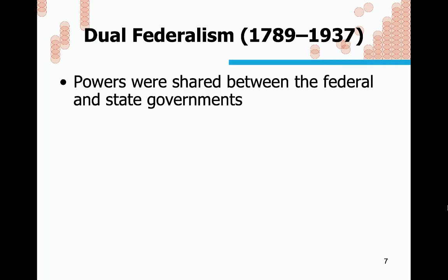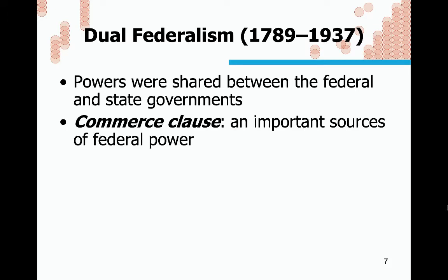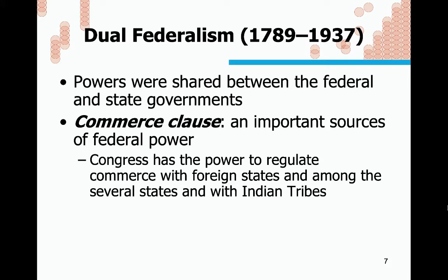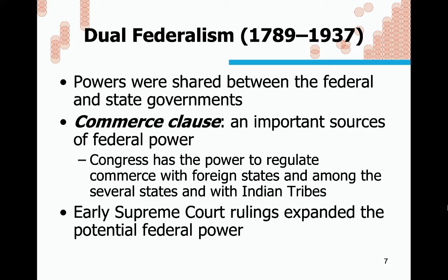A bit of history on federalism — I'll go over this quickly. Early on after the founding, we had dual federalism where powers were shared between federal and local governments. The commerce clause is an important source of federal power: it states that Congress has the power to regulate commerce with foreign nations, among the several states, and with Indian tribes. This means if anything crosses state boundaries, Congress has the power to regulate it — for example, a business transaction between Arizona and New Mexico would fall under federal law.